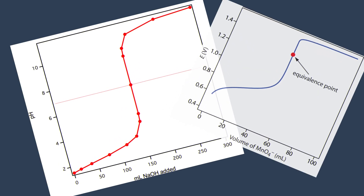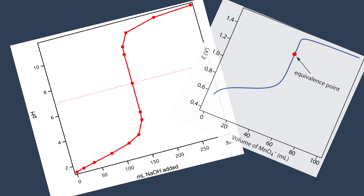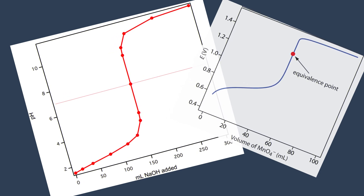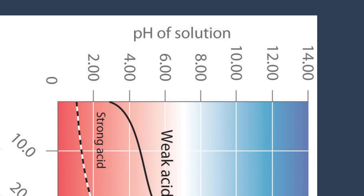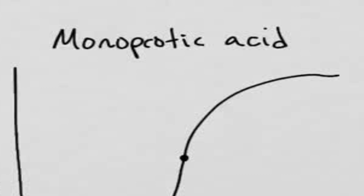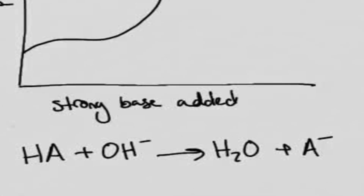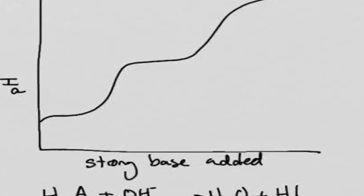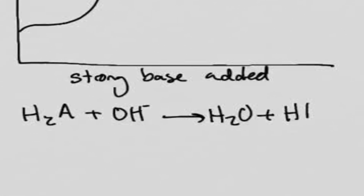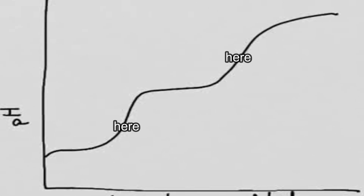Next are titration curves. The ability to analyze them helps us understand the pH changes during the titration of acids and bases. A titration curve is a plotted graph of pH versus the volume of the titrant added. For monoprotic bases and acids — mono meaning it donates one proton — the curve shows a single steep rise to the equivalence point. For polyprotic bases and acids, which donate more than one proton, the curve will have multiple equivalence points.